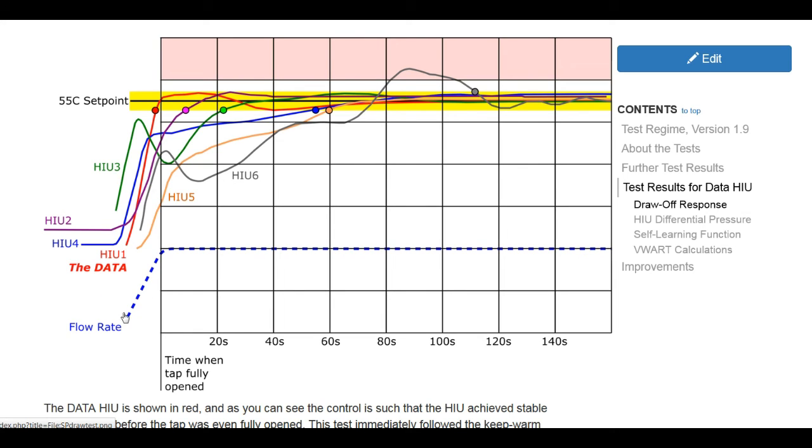Now, initially as the tap is opened, the HIUs respond, letting heat in, and the temperature of the domestic hot water increases. The idea is to get to a set point of 55 degrees C and maintain that throughout the draw-off. Now, the HIU, the data in red here, we'll see achieves a set point within a degree of 55 degrees C before the tap is even fully opened, then stays within a degree of C throughout the entire test, leveling off to within a degree of target temperature.